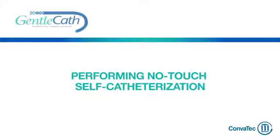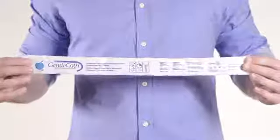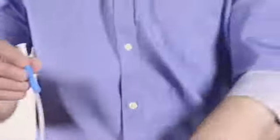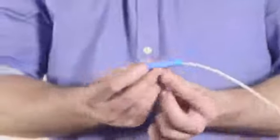Your Gentle Cath Hydrophilic catheter is now ready for use. Simply open the package by peeling the tabs at the connector end and remove the catheter. Remember to keep the top of the pack upwards to stop water from running out of the pack.